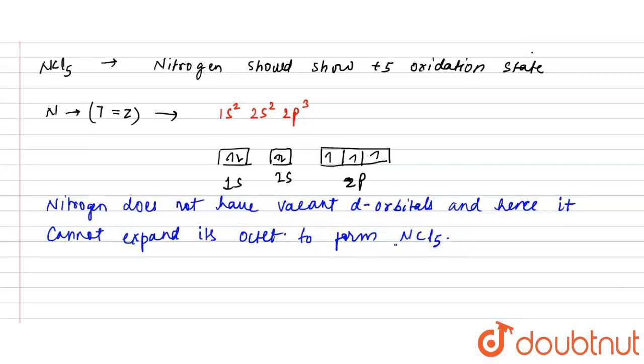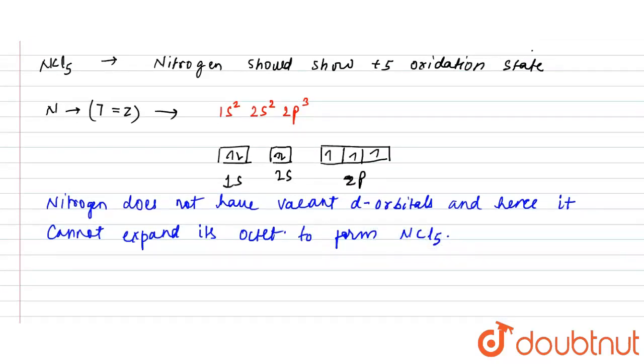Now let's see what happens in case of phosphorus. The atomic number of phosphorus is 15. So if you want to draw its configuration, it will be 1s² 2s² 2p⁶ 3s² 3p³.